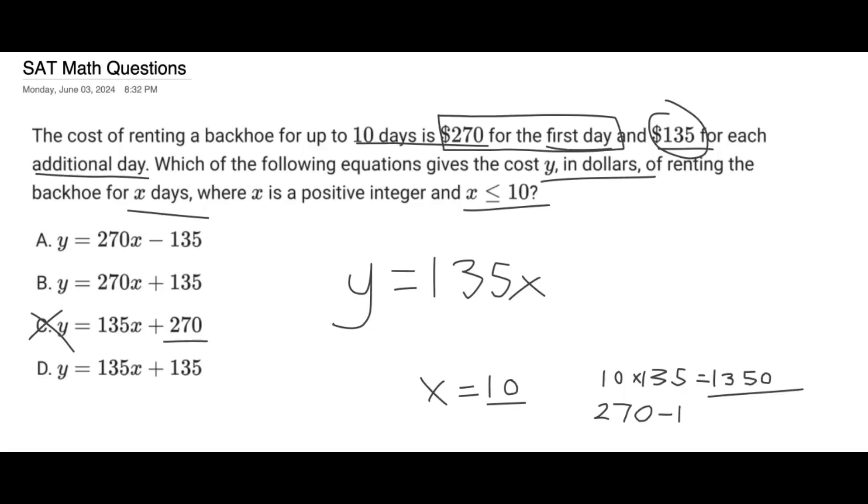So we can do $270 minus 135, and that gets us 135. And so we know that this is the unpaid amount, and so we need to add this to the end of our rule. So it's 135X plus 135. And so our answer is choice D.